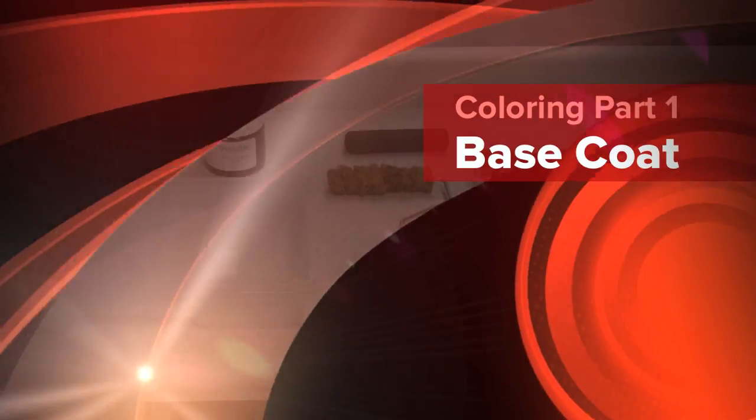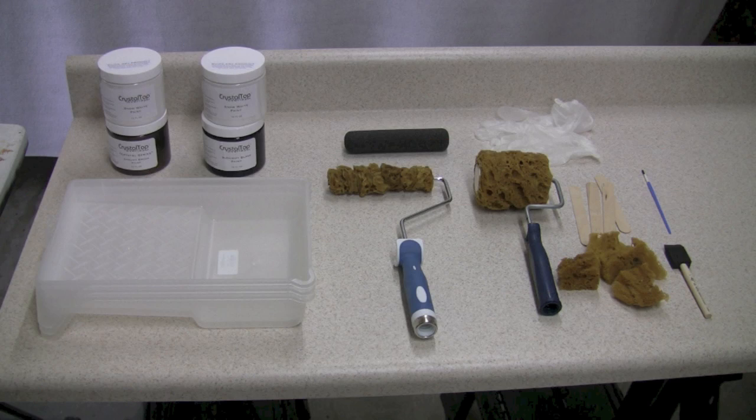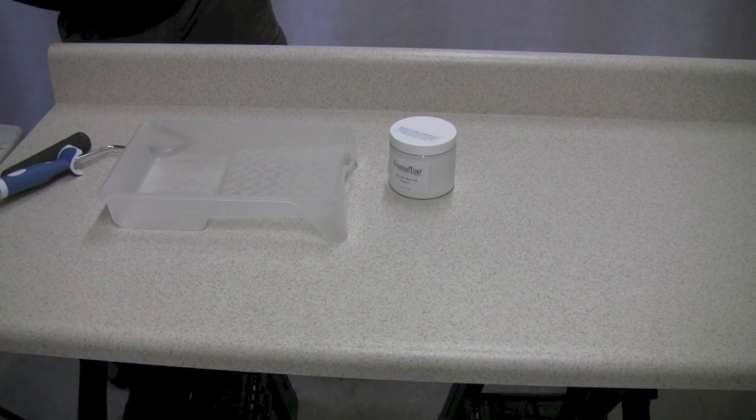Now that you've prepped your countertop, we're going to move to the second step, which is the coloration process. In your kit, you're going to need these items. It would be a great idea to have a little table to the side beside your countertop so that you have a work area to begin applying the base coat.